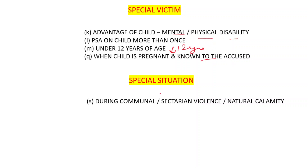What is a special situation? Offenses committed during communal violence, sectarian violence, or natural calamity — such as an earthquake. If committed under such circumstances, it falls under section 5 and section 9.